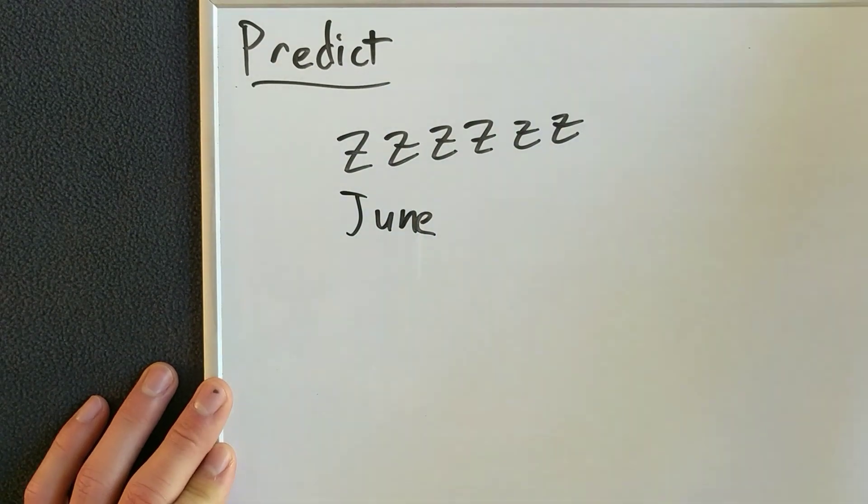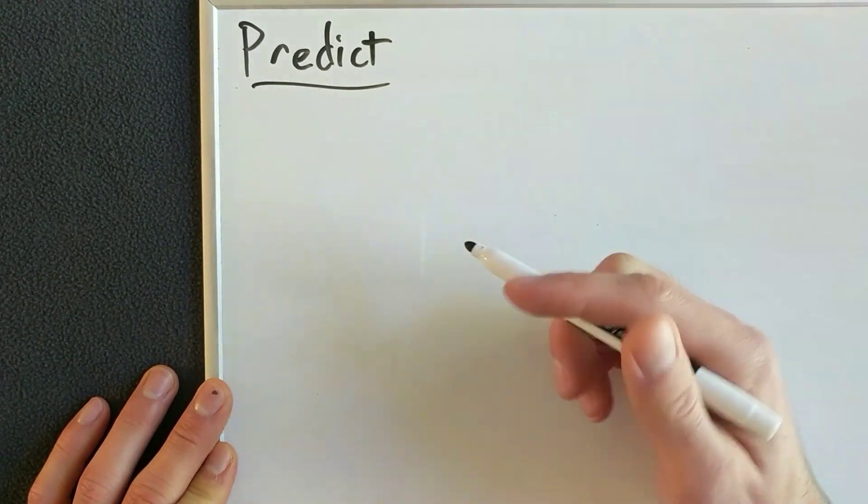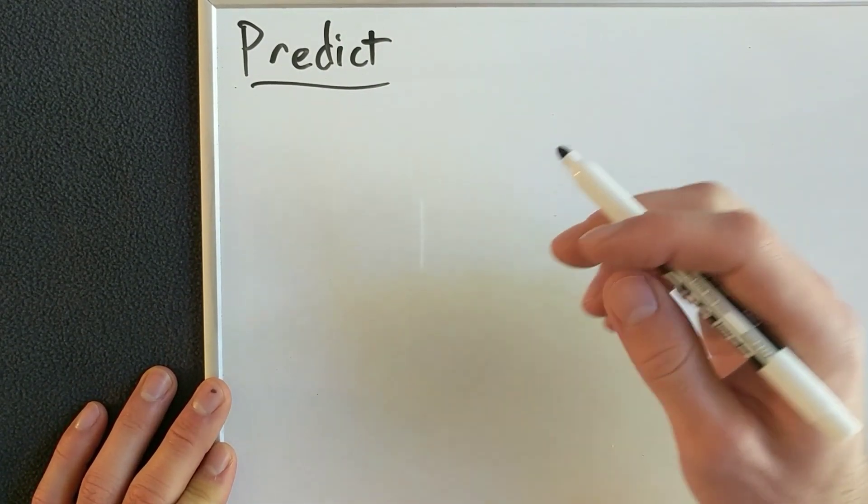The first thing I'll do is measure how much she sleeps, let's say, over six days. And I'll try to use that to predict how much she's going to sleep on the seventh day.